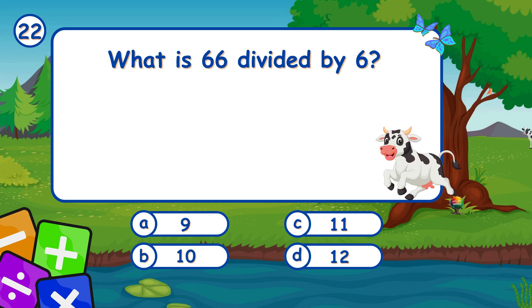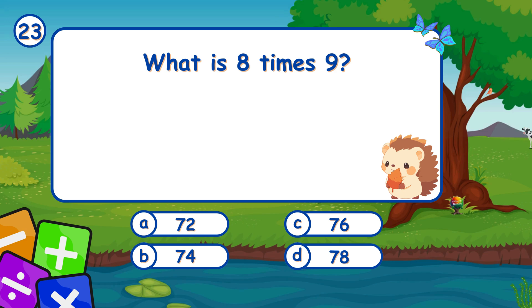What is 66 divided by 6? It's C, 11. 66 divided by 6 is 11. What is 8 times 9? It's A, 72. 8 times 9 is 72.